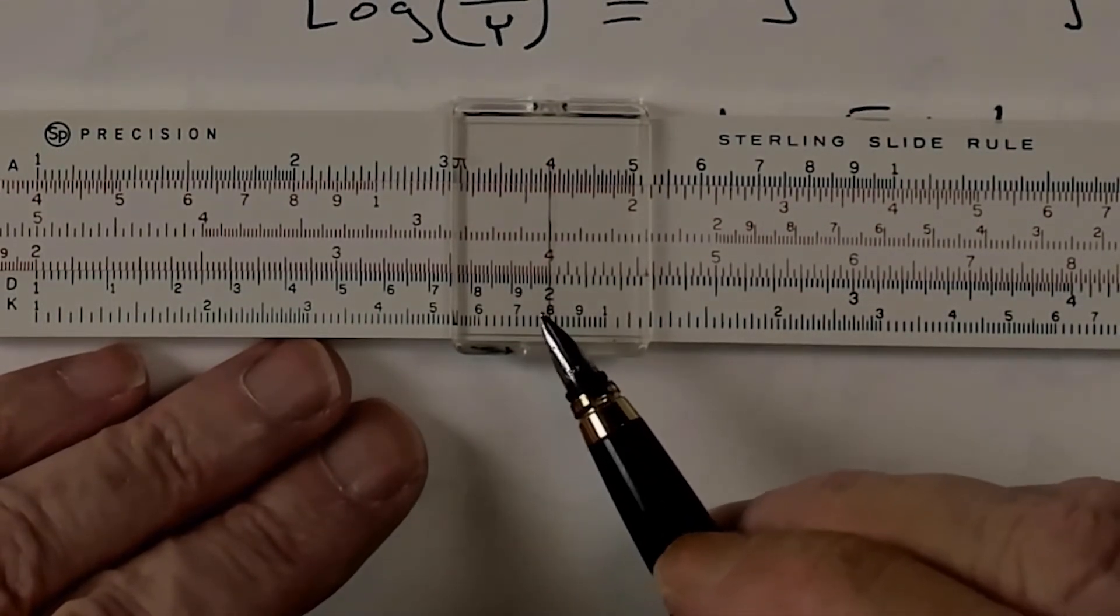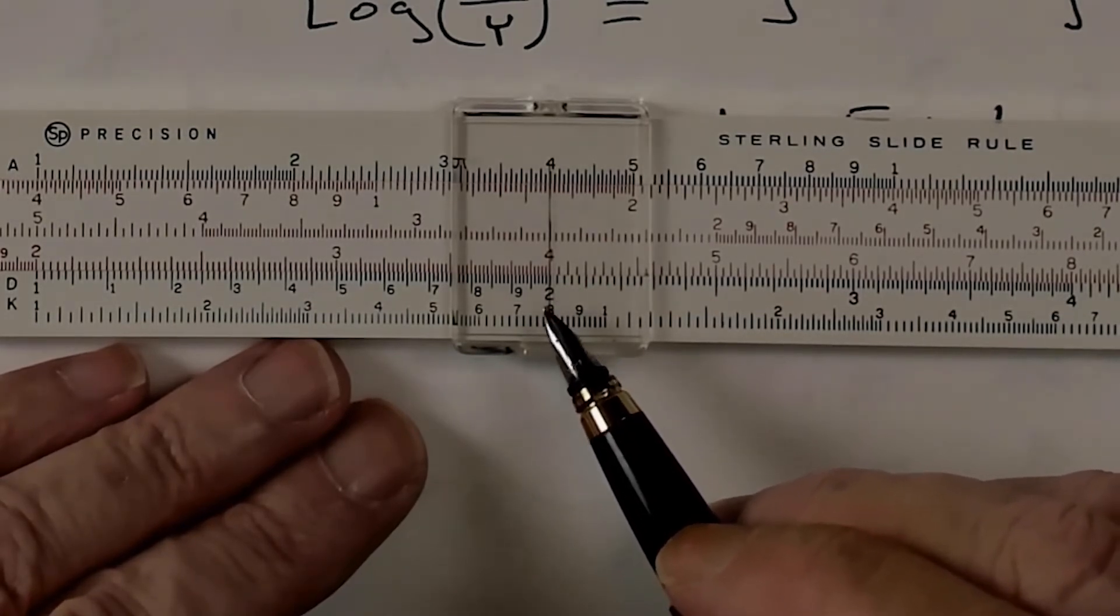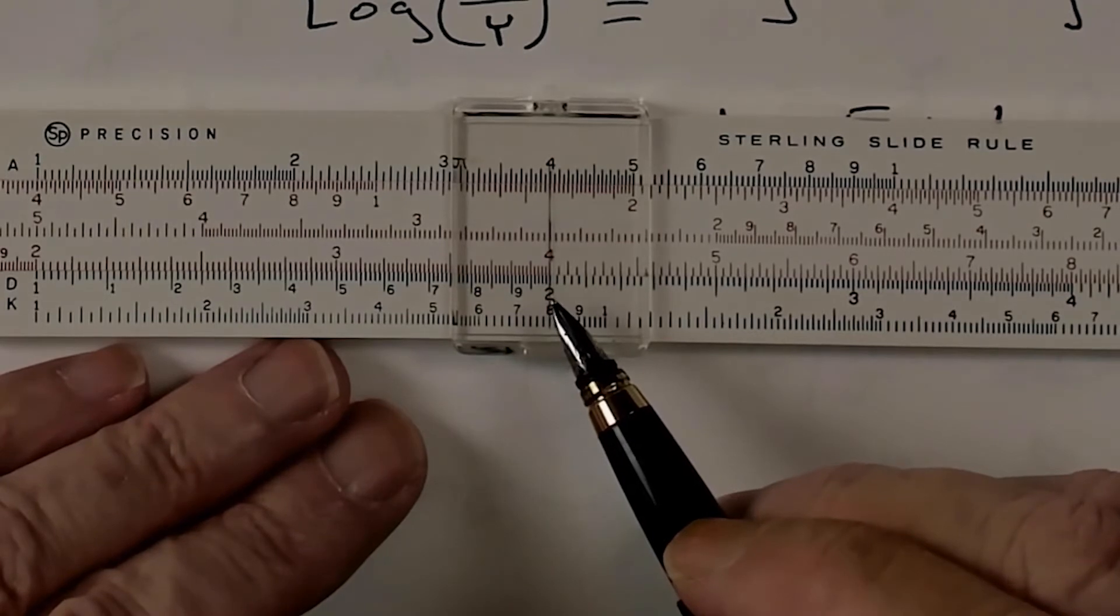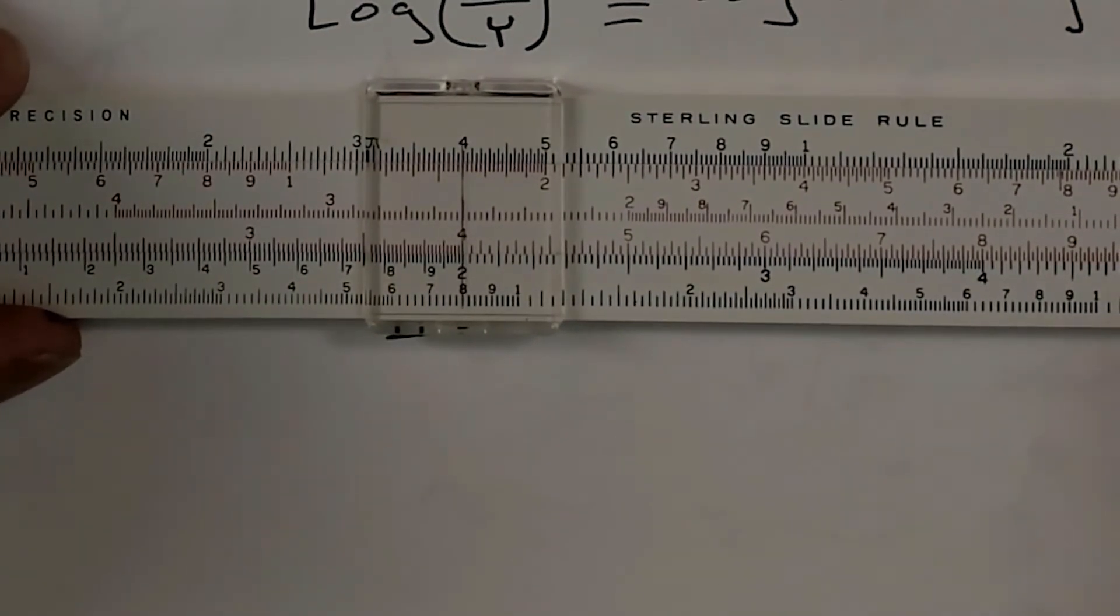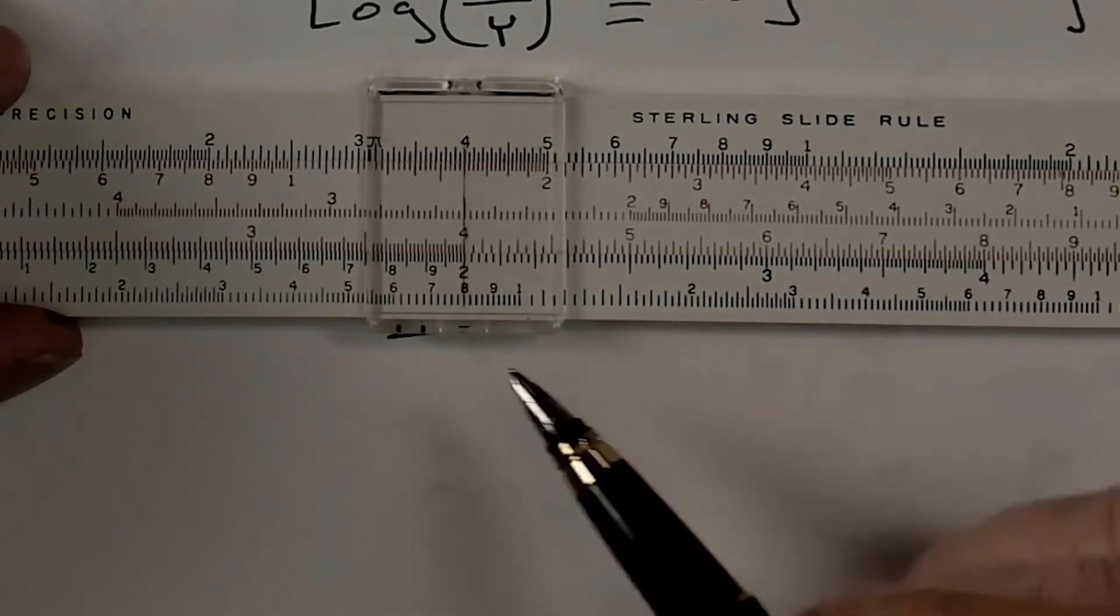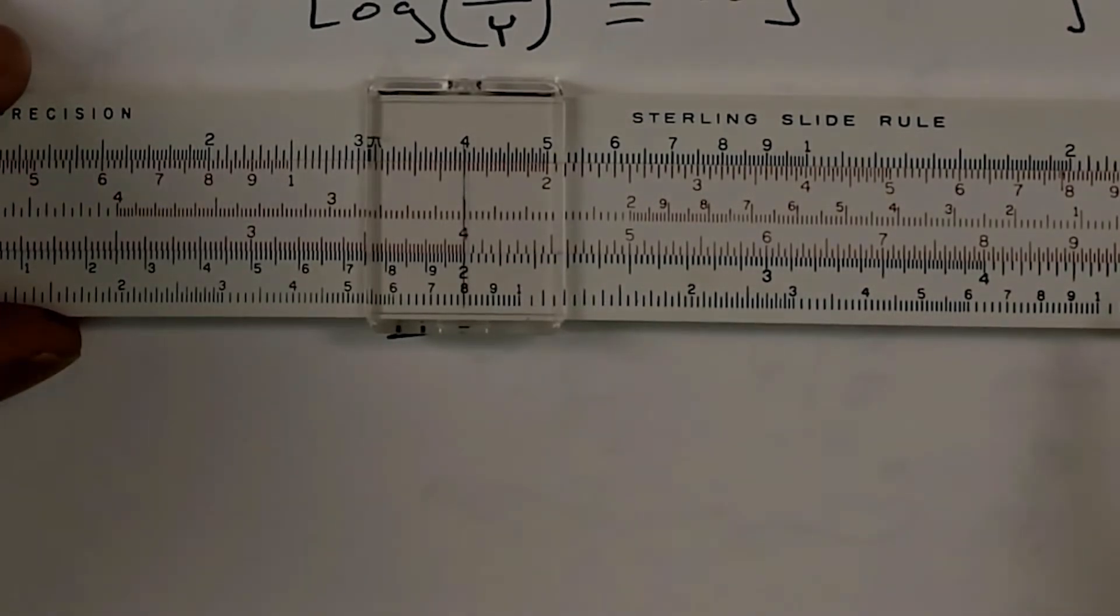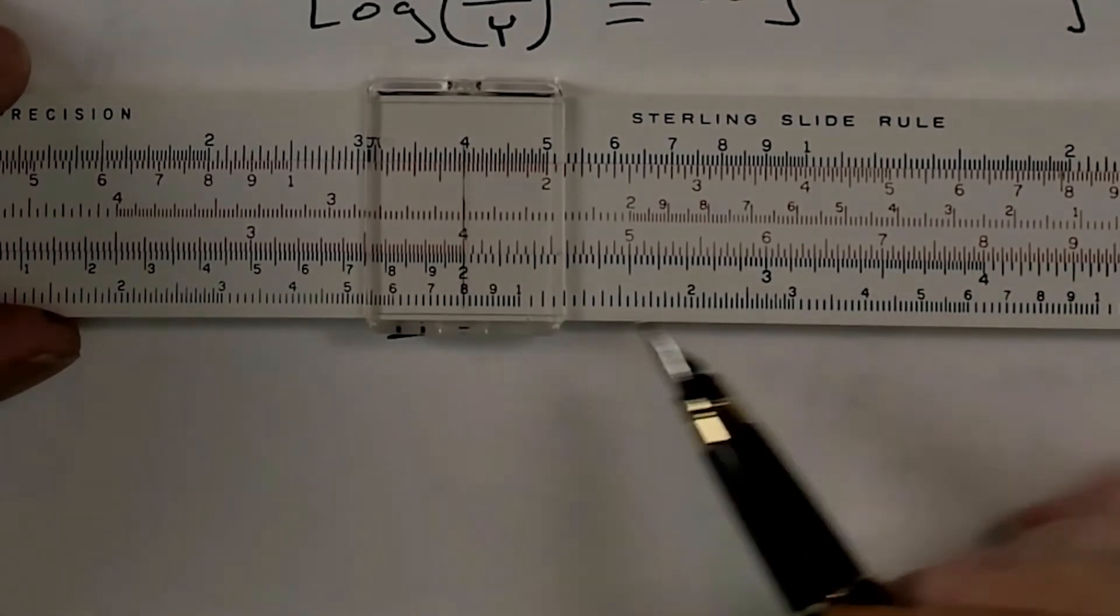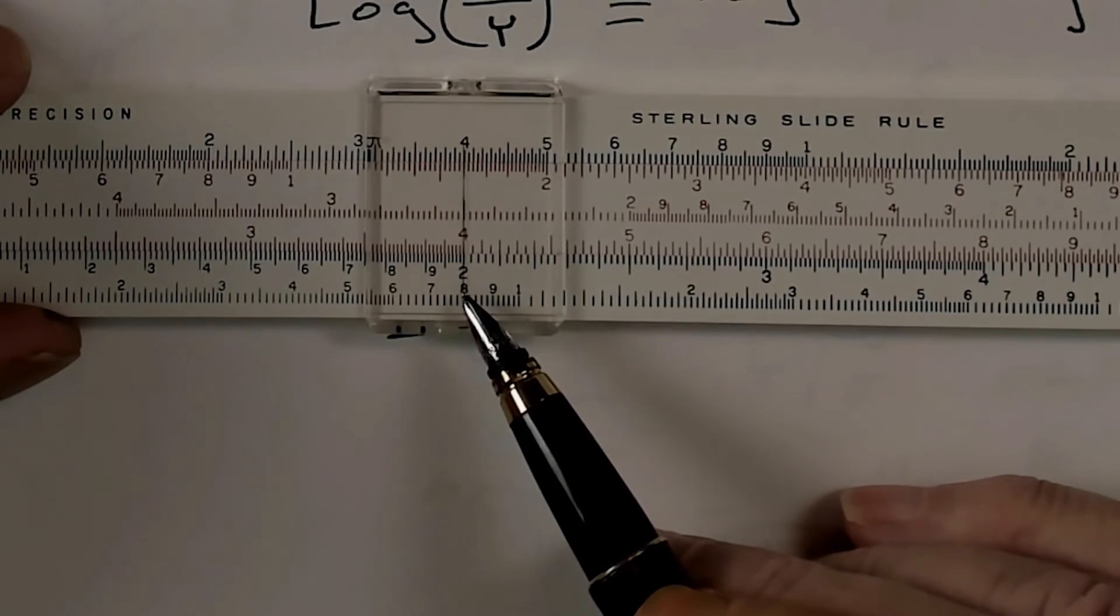And remember, our answer is 5 times 4 equals 20. So, this brings up a problem that you have with the slide rule. And that is that you have to be able to figure out where the decimal place belongs. And there's a couple of ways to do that. The first way is obviously 5 times 4 is going to give me a number that's in the tens. It's not going to give me a number between 0 and 9. It's not going to give me a number greater than 100. It's going to be somewhere in the tens.